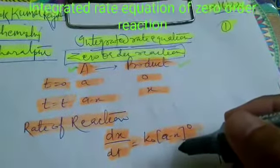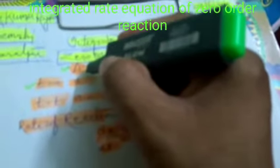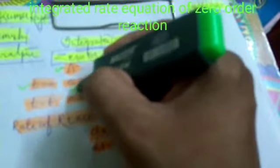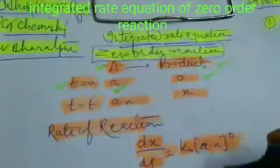A is converting to product and at T equal to zero, the concentration or number of molecules of A is small a and product is zero. The reaction is not started so product is zero.